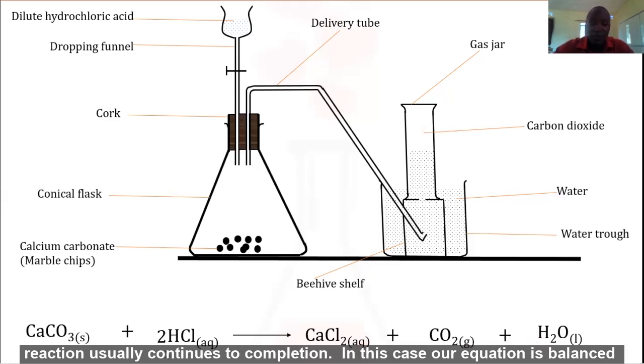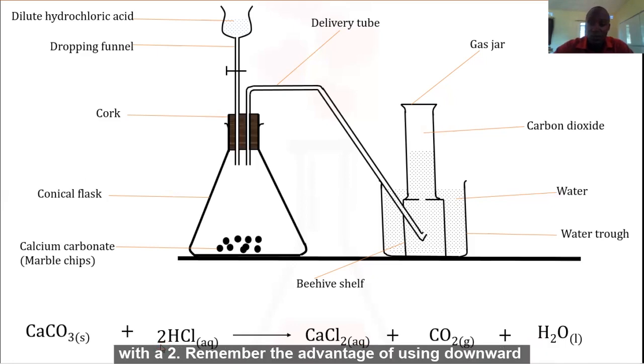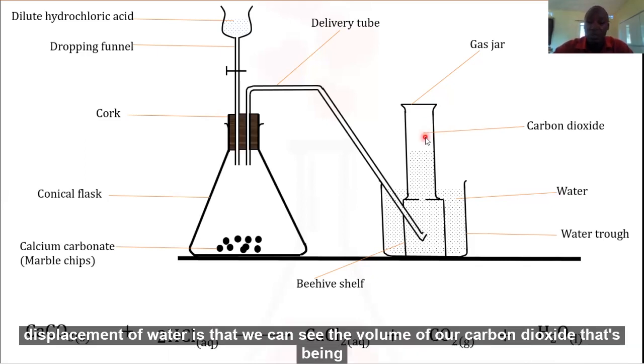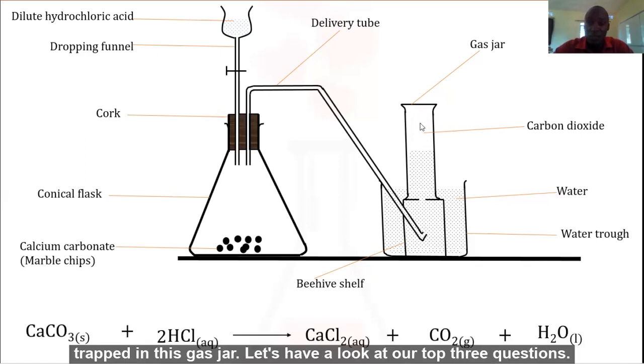In this case, our equation is balanced with a two. Remember the advantage of using downward displacement of water is that we can see the volume of our carbon dioxide that's being trapped in this gas jar.